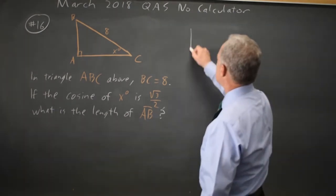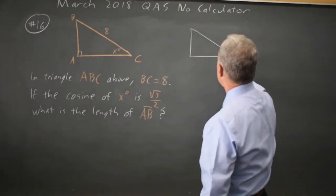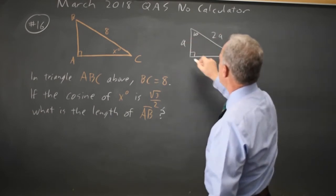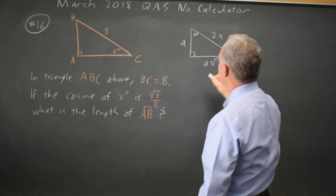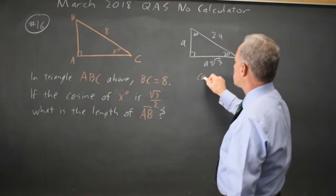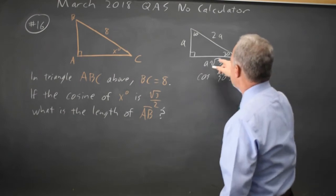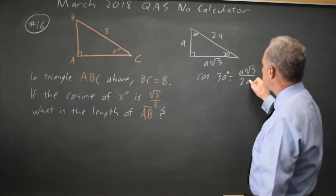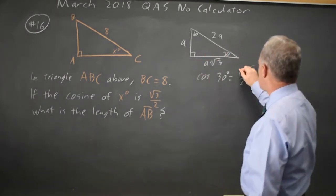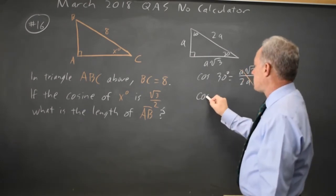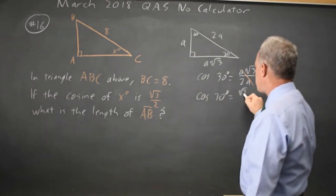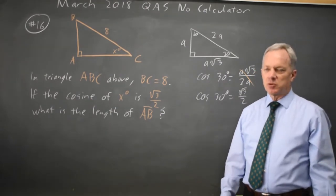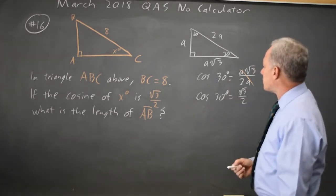This tells us that in a 30-60-90 triangle, we have 2A, A, A root 3, which means that cosine of 30 degrees is the adjacent side over the hypotenuse, which is A root 3 over 2A. Since A over A is 1, cosine of 30 degrees is square root of 3 over 2. This is a fact you have to learn in your algebra career, and it's worth relearning if you're a little rusty.